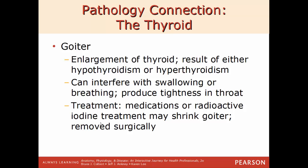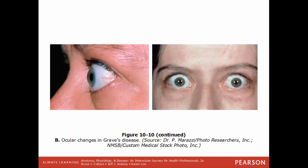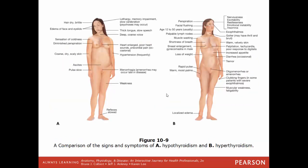Treatments for goiter include medications, radioactive iodine treatments to shrink it, or surgical removal. Visual examples show very prominent and more subtle goiters, enlarged bulging eyes from Graves disease, and a summary table of symptoms comparing hypothyroidism and hyperthyroidism side by side. Contrasting symptoms include slow pulse versus rapid pulse, feeling very cold versus feeling very hot, dry brittle hair versus flushed face, and rough dry scaly skin versus warm almost velvety skin texture.